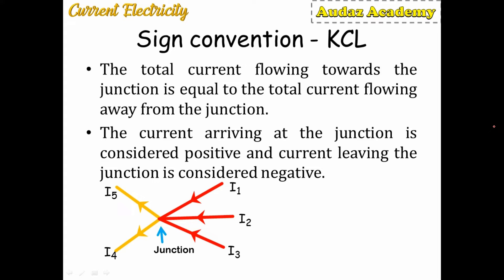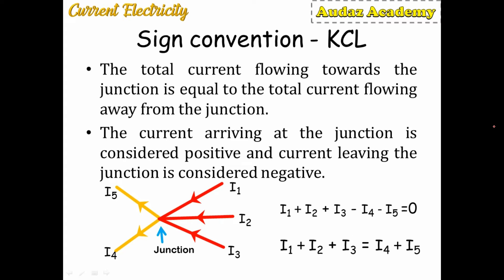In the diagram, i1, i2, and i3 flow towards the junction and are positive, whereas i4 and i5 flow away and are negative. So mathematically: i1 + i2 + i3 − i4 − i5 = 0, or simply i1 + i2 + i3 = i4 + i5.